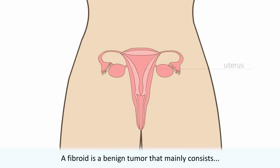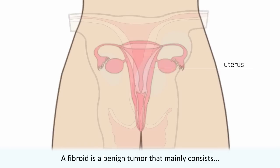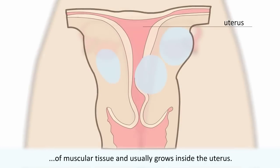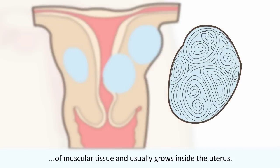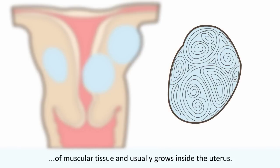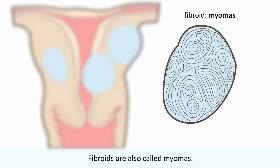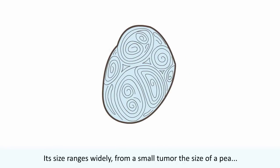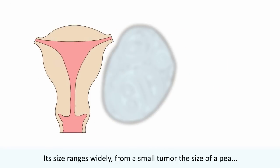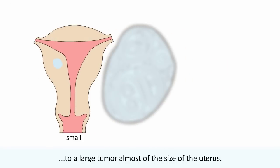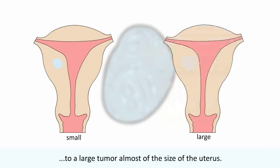A fibroid is a benign tumour that mainly consists of muscular tissue and usually grows inside the uterus. Fibroids are also called myomas. Its size ranges widely from a small tumour the size of a pea to a large tumour almost the size of the uterus.